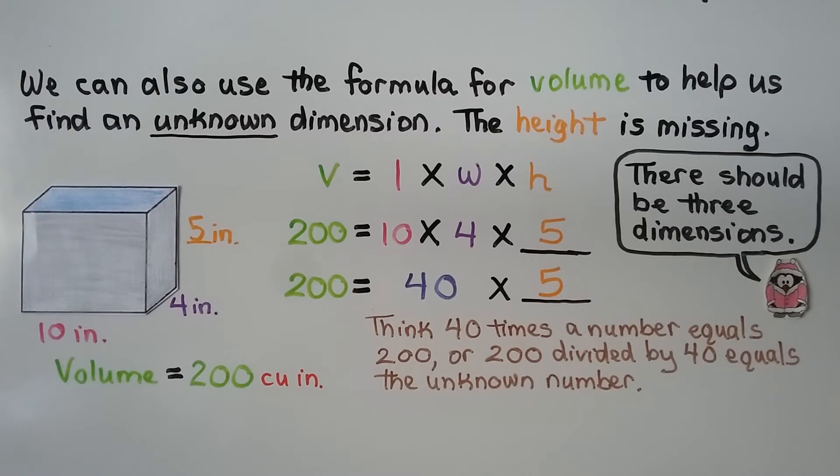Do you know what it is? If you said 5, you're right. 40 times 5 equals 200. So we know the height must be 5 inches.